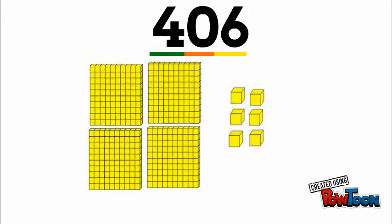All right, let's try another one: 406. So look at our first place value, the ones—we have six so we're gonna put six little cubes. Now we have a zero in the tens place, we don't have to put anything for that, and we have a four in the hundreds place.